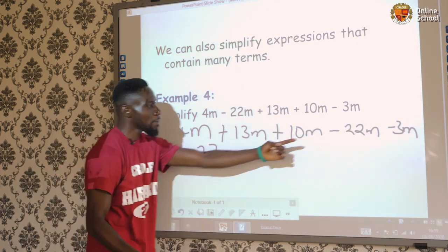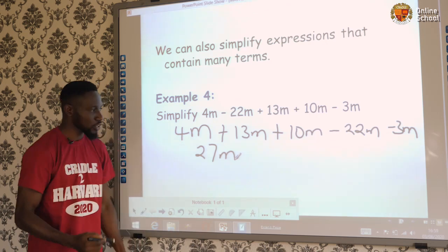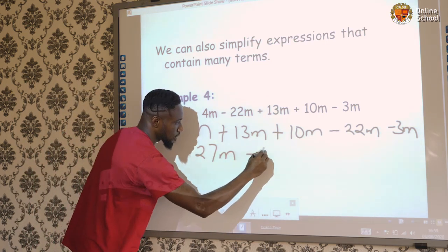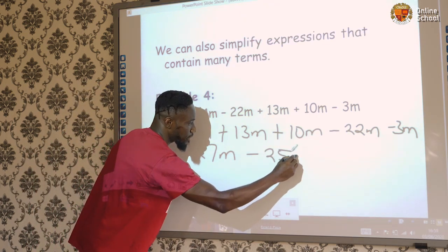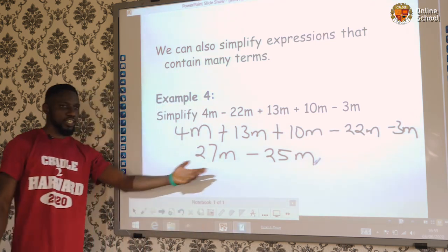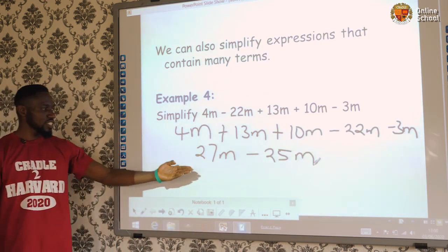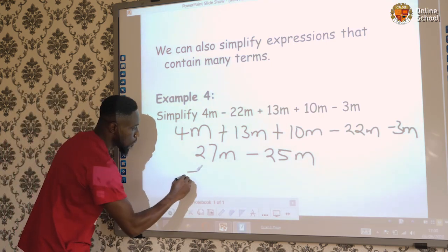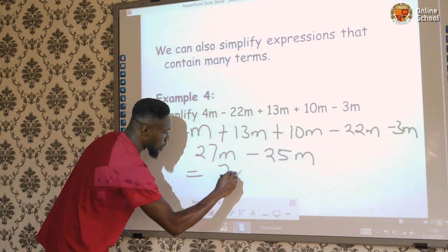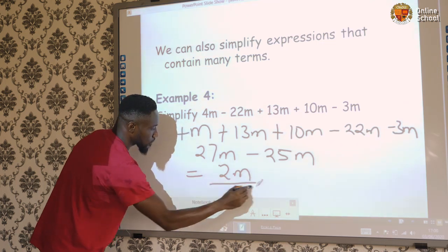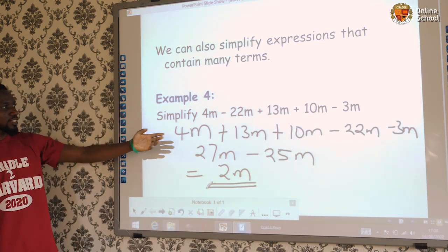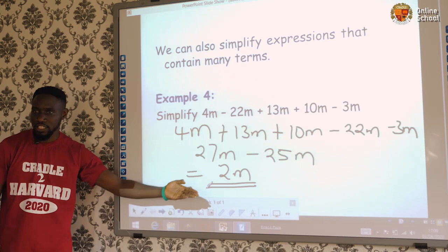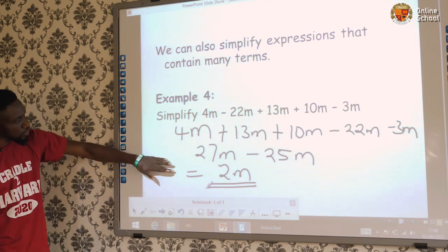Then we'll have minus 22 minus 3. It'll give us minus 25m. We can further solve. What do we do? 27m - 25m is going to give us 2m. Why is it that we can solve further up to this level? Because the terms are the same. They are like terms. Do you understand? Now, we'll go to the next page.